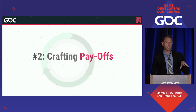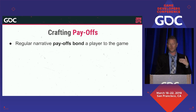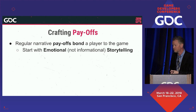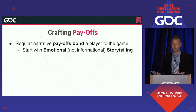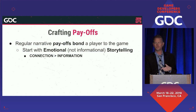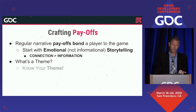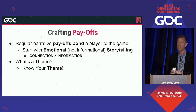Number two: crafting payoffs. Now that you've got your audience in the door and you're telling them the right story, how do you keep them there? Regular narrative payoffs bond a player to a game. You want to establish a habit — an expectation of a payoff that's going to come. You need to do that by starting with emotional storytelling, not informational storytelling. You will never hook anybody with a bunch of data about plot points and a list of planets to visit. Nobody cares. Connection is better than information. Start with a theme, because themes are what people feel — it's a really easy way to explain to people how they're supposed to feel in your game. And you have to know what your theme is.